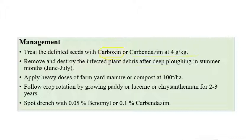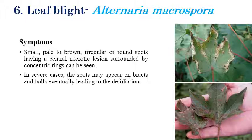Coming to management of Verticillium wilt: acid delinting along with seed treatment with carboxin or carbendazim at 4 grams per kilogram of seeds is recommended, along with removal and destruction of infected plant debris and deep summer plowing during June and July. Application of farm yard manure at 10 to 15 tons per hectare is recommended. Crop rotation with paddy, legumes, or chrysanthemum for 2 to 3 years will also provide relief. Soil drenching with 0.05% Bavistin or 0.1% carbendazim gives better control of this disease.